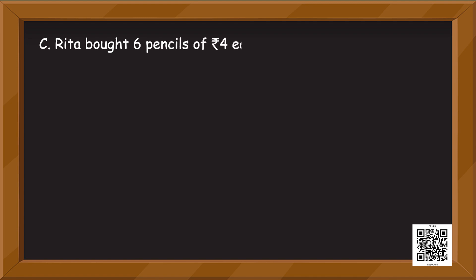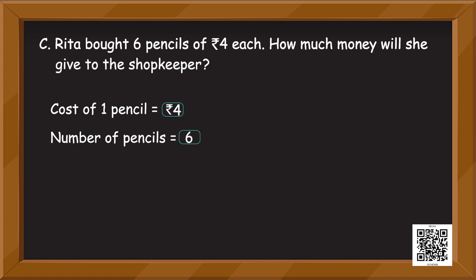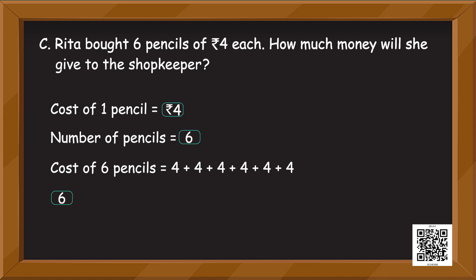Rita bought six pencils at rupees four each. How much money will she give to the shopkeeper? The cost of one pencil is given in the question — rupees four. Number of pencils is six, and cost of one pencil is four. So cost of six pencils: we can add four six times, or we multiply — six into four is equal to twenty-four. Rita will give twenty-four rupees to the shopkeeper.